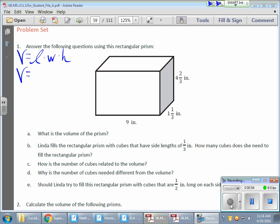So I have my nine inches, I have my one and one-third inches, and I have my four and two-thirds inches. We need to multiply all these out.